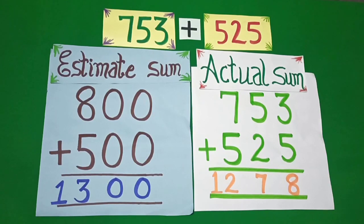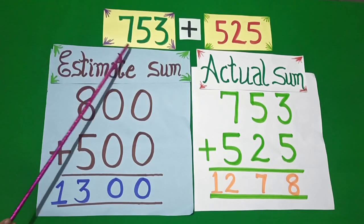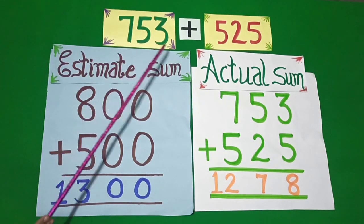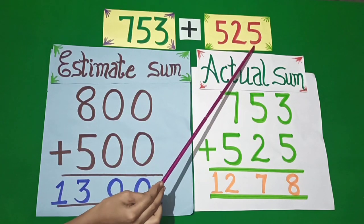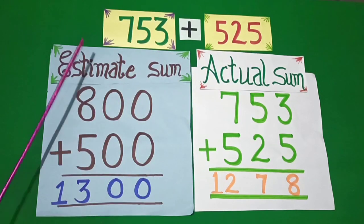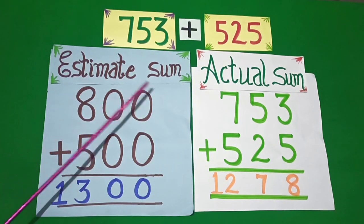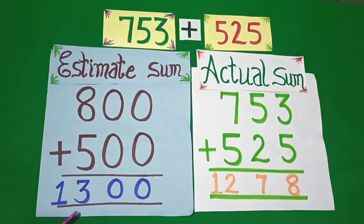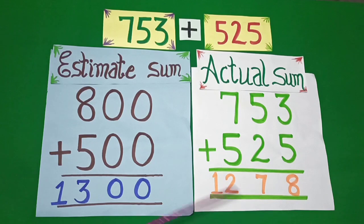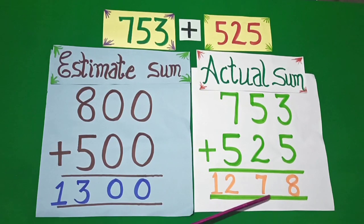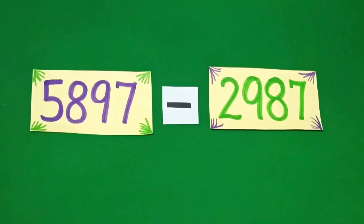So dear students, the estimated sum of 753 and 525 is 1,300 and the actual sum is 1,278.